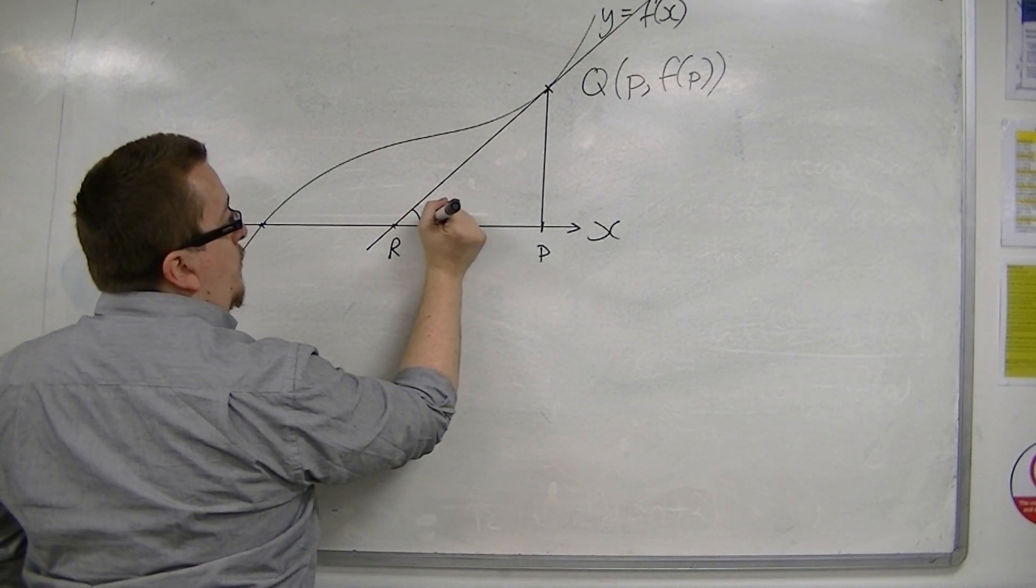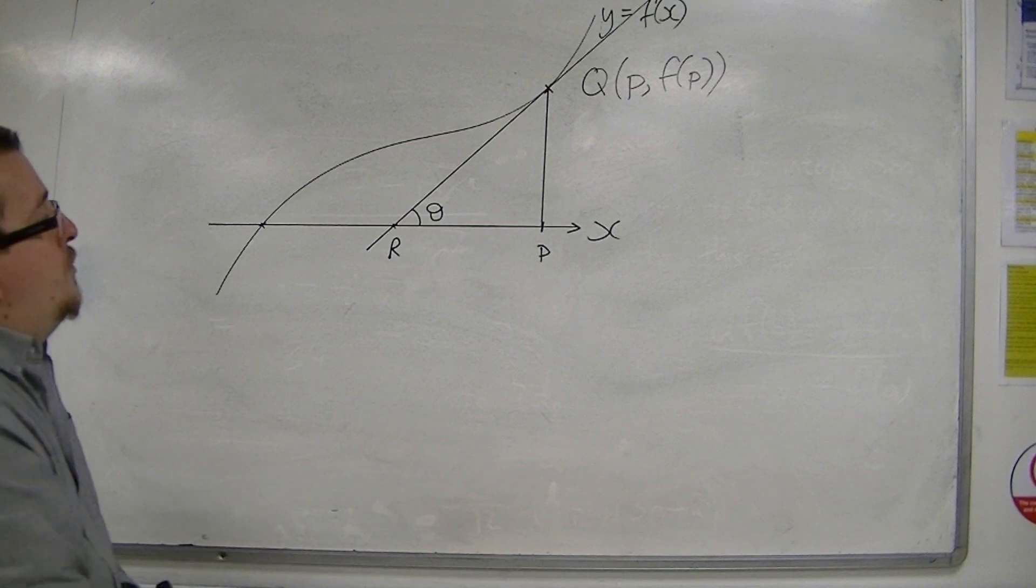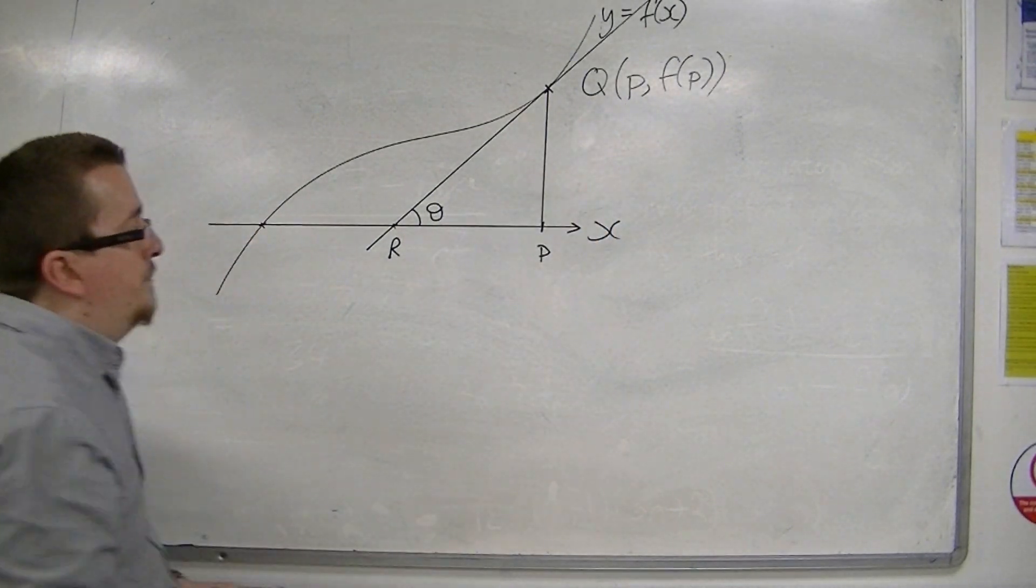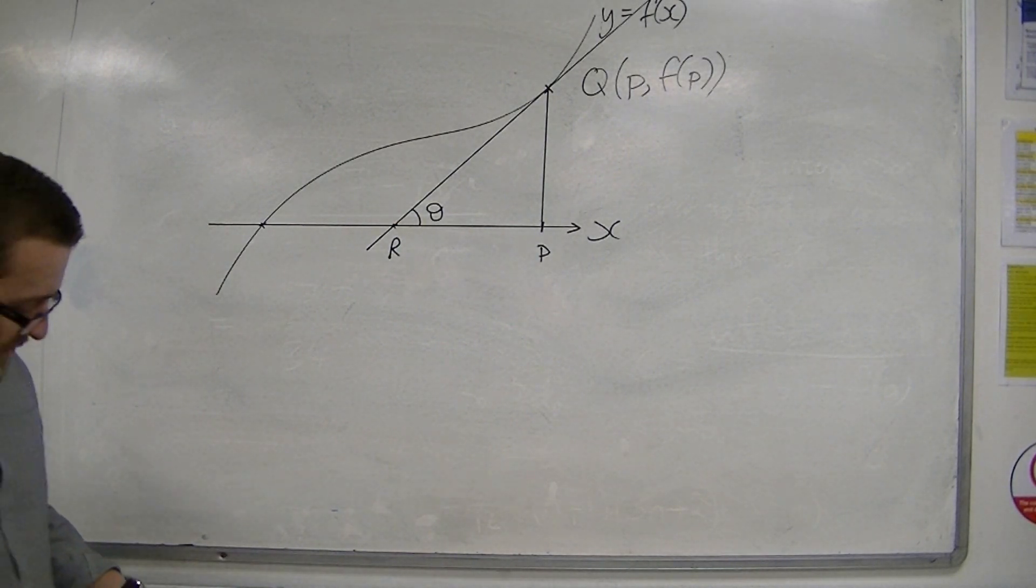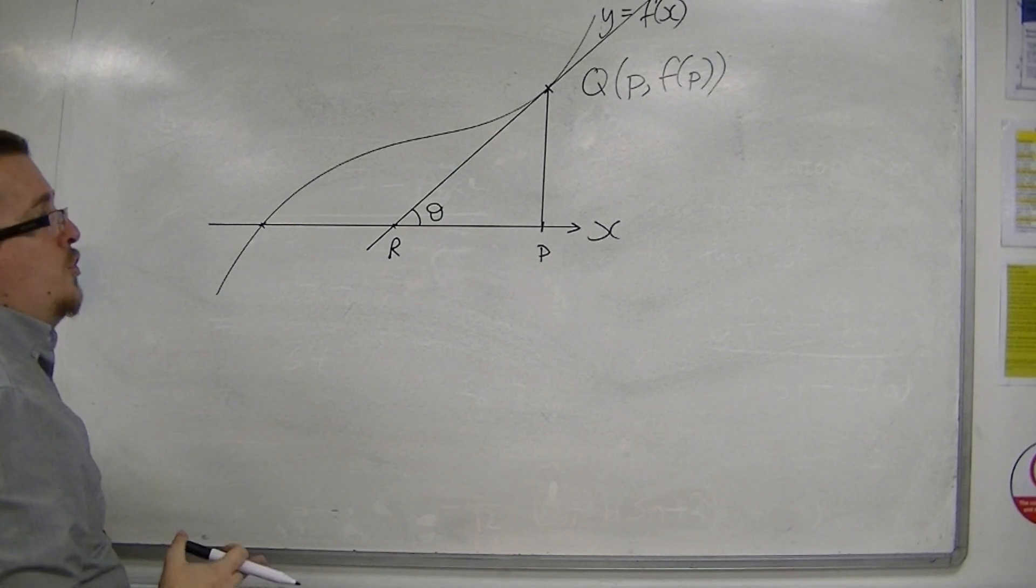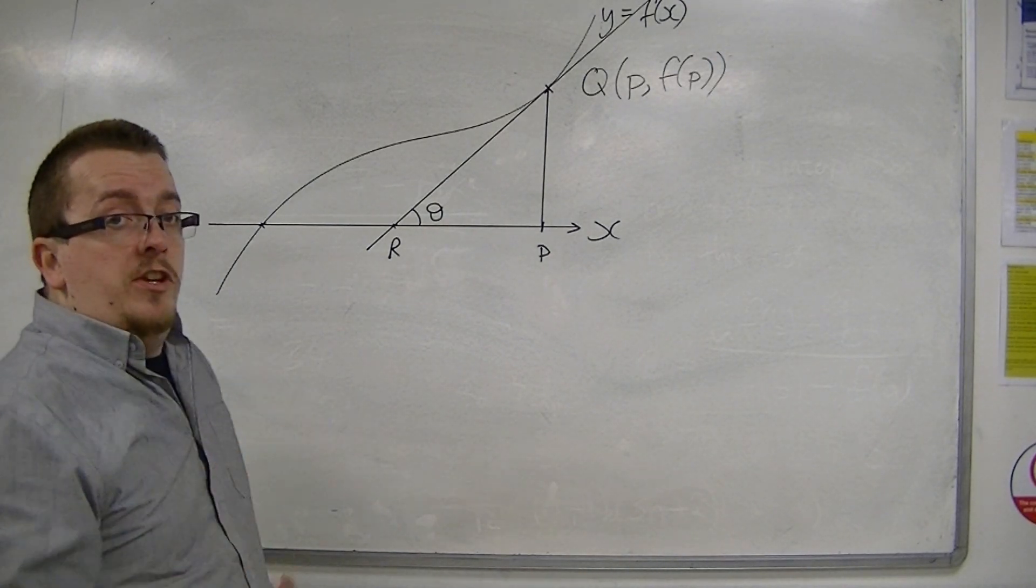Now that line is going to make an angle theta with the horizontal. So I've got three coordinates here: R, P, and Q. So if I'm looking at the gradient of that line, I can express it in two different ways.